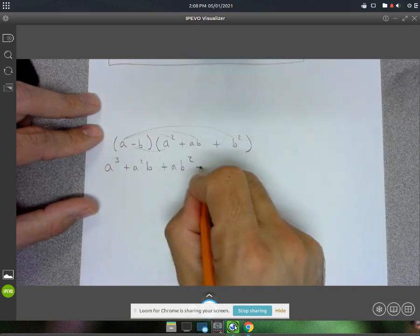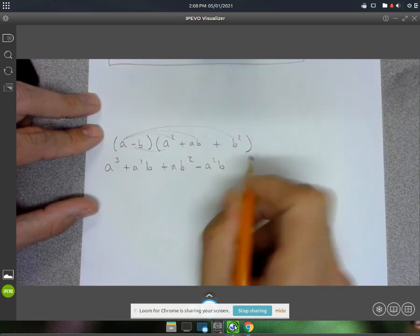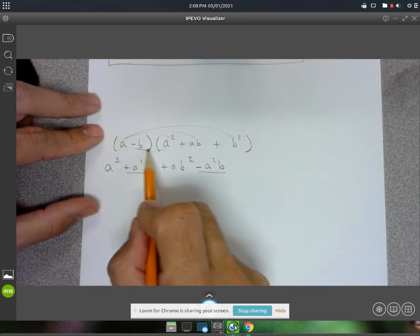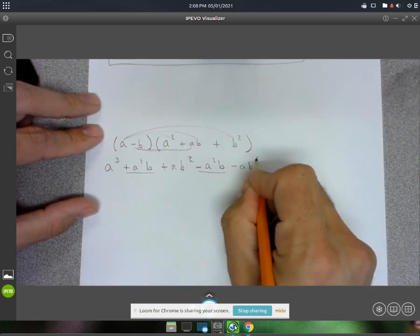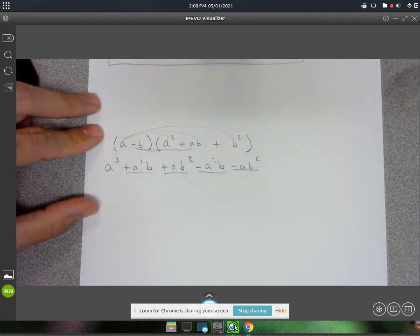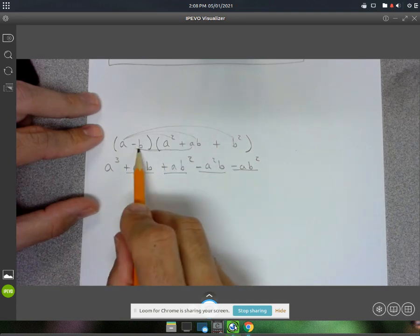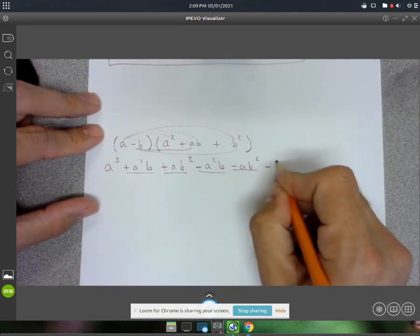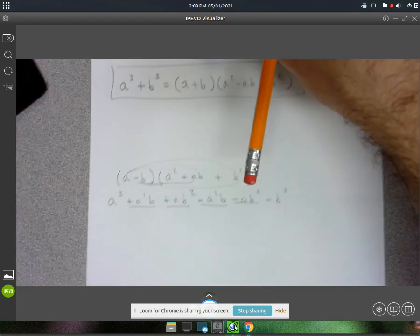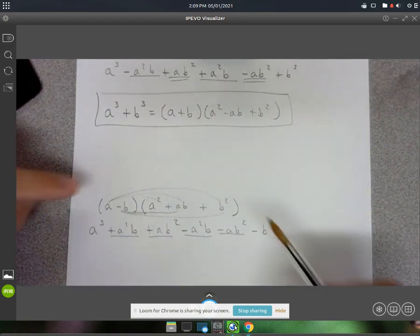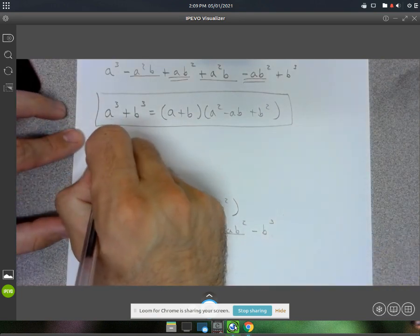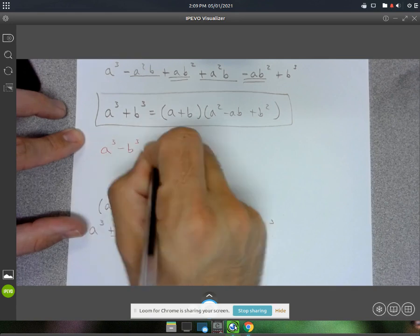Then we get negative a²b - those cancel. Then negative ab² - those cancel too. And the last is negative b times b², which gives negative b³. So that tells us that a³ - b³, which is the difference of cubes formula.